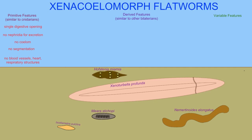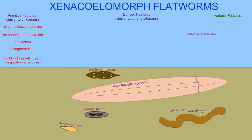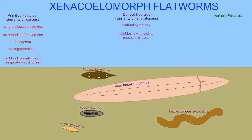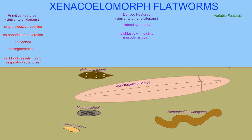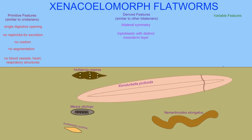However, they do have advanced features which justify their classification as bilaterians. They are bilaterally symmetrical. They are triploblastic with a distinct mesoderm layer. So, unlike cnidarians that have an endomesoderm — a tissue layer which produces both endodermal and mesodermal cells —